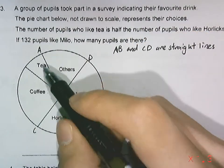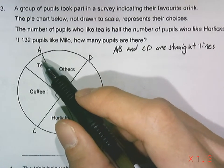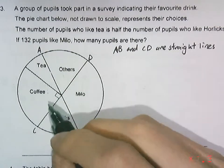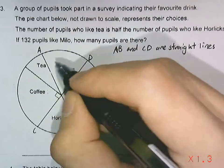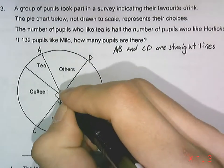I'm going to label down the alphabets, so AB and CD are straight lines. Since there are straight lines, this angle here in the Horlicks sector would be the same as the other sector.